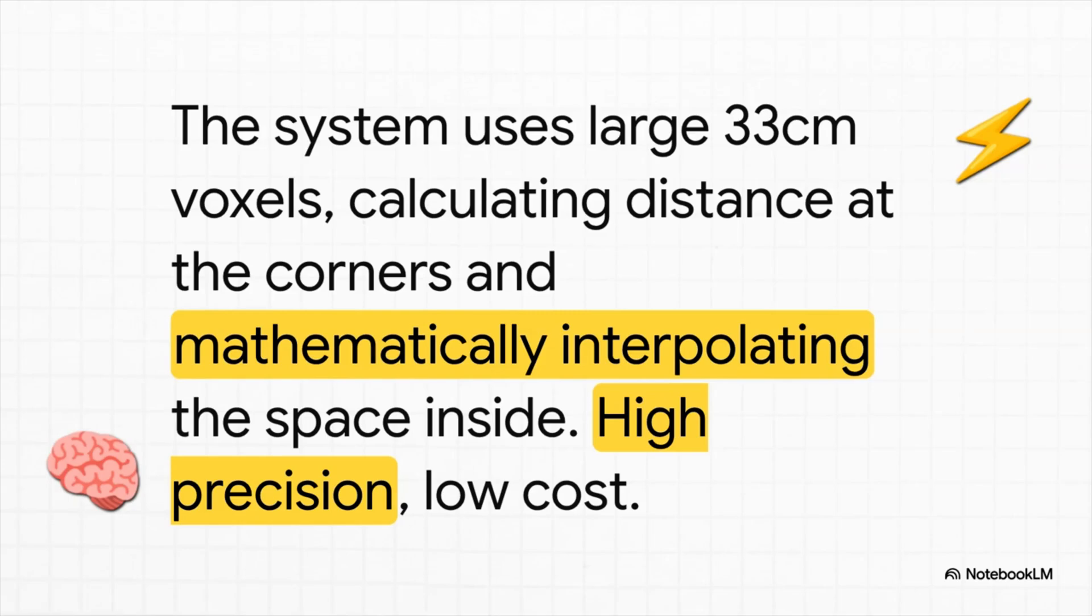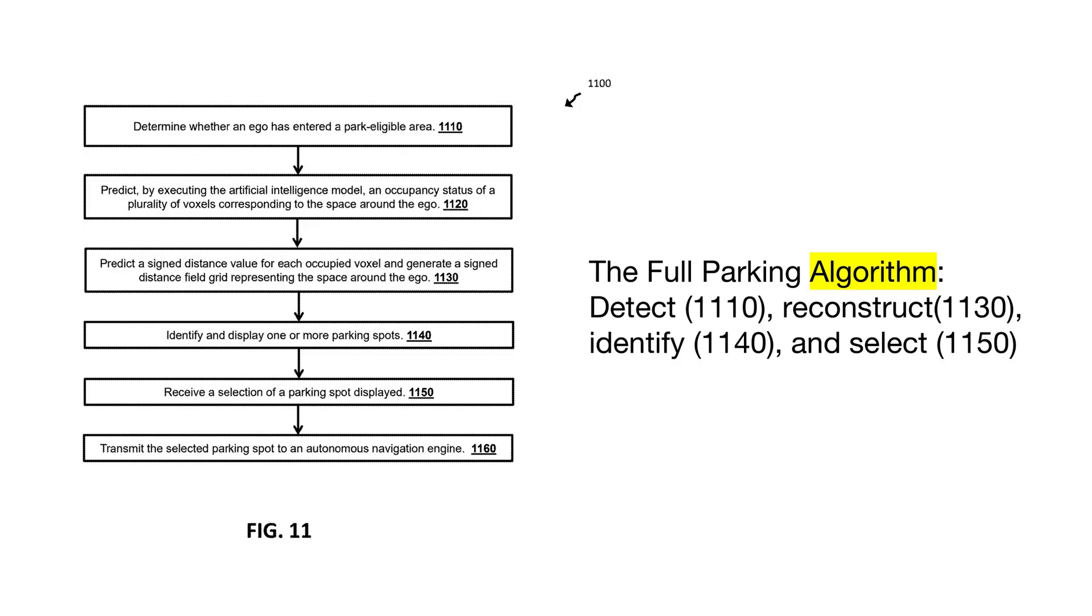So let's put it all together and look at the full algorithm. This is more than just seeing—this is the car's actual thought process. You can see it here in this flow chart. First, it asks itself, 'Am I even in a place where I can park?' Then it builds that amazing 3D map of the space using the SDF system. Once it has the map, it starts looking around for specific valid parking spots. And finally, it shows those options to the driver so you can pick one. It's a really logical, step-by-step decision-making process.